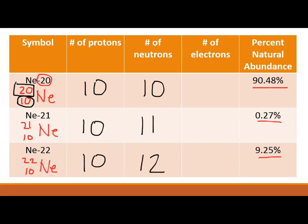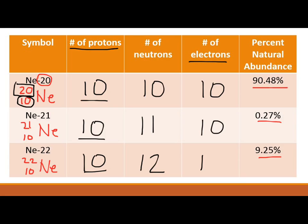What about the number of electrons? All of these isotopes are neutral — if they weren't, they'd have a plus or minus charge in the top right-hand corner. Since they're neutral, they must have equal numbers of protons and electrons, because protons are +1 and electrons are -1. So 10 protons means 10 electrons for all three isotopes.